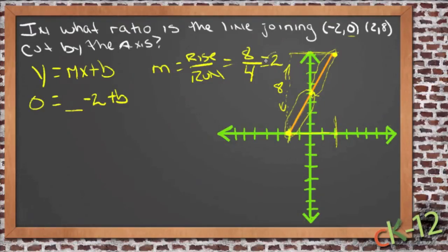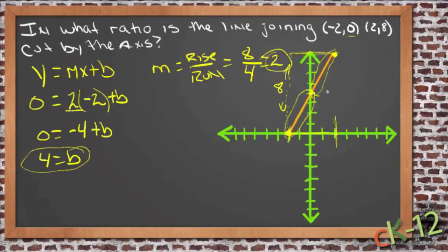So now we can take this 2 value and put it in place over here, where m would be, and we get 0 equals 2 times negative 2, which is negative 4, plus b. Add 4 to both sides, and we get 4 equals b. b is the y-intercept, so we know that this point here actually is at 4. That's good.